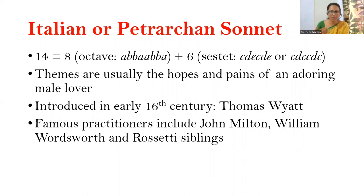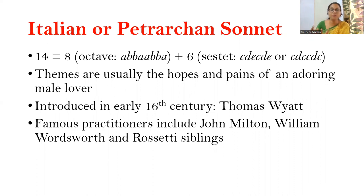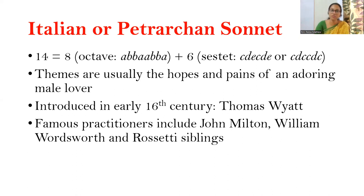The difference between the types lies in the stanzaic form. The Italian or Petrarchan sonnet is divided into two stanzas: an octave and a sestet. An octave is an eight-line stanza and a sestet is a six-line stanza, so combining both gives the 14-line poem we call an Italian or Petrarchan sonnet. The themes are usually the hopes and pains of an adoring male lover. It was introduced in early 16th century English literature by Thomas Wyatt, and famous practitioners include John Milton, William Wordsworth, and the Rossetti siblings — D.G. Rossetti and Christina Rossetti.